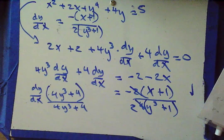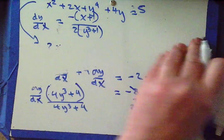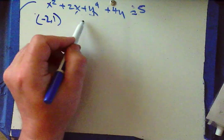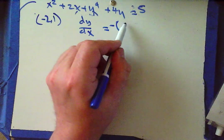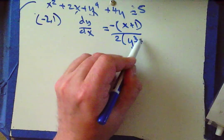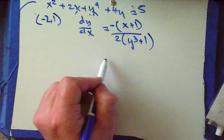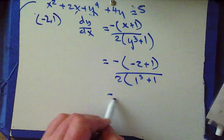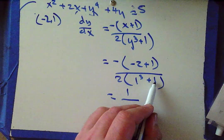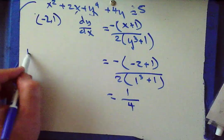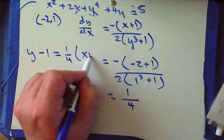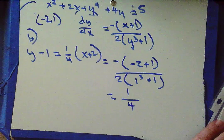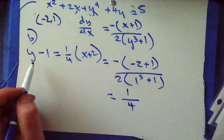Part b: write the equation of the tangent line to the point (negative 2, 1). We've got an ordered pair; we just need a slope. We were told dy/dx equals negative(x plus 1) over 2(y³ plus 1). Plugging in (−2, 1): negative(negative 2 plus 1) over 2(1 plus 1) equals negative(−1) over 4, which is 1/4. So the tangent line is y minus 1 equals 1/4 times (x plus 2). That's part b.